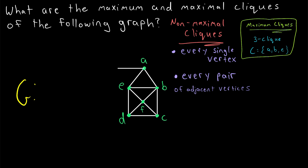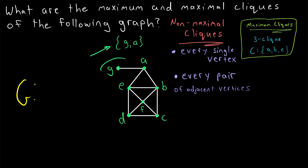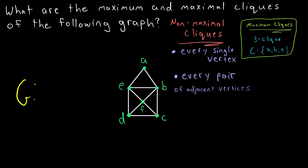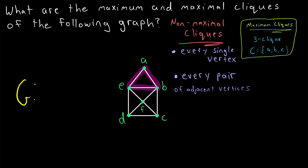Just to quickly adjust this example, suppose we have another edge joining the vertex A to some other vertex G. Then the two vertices G and A would make up a maximal clique, because they make up a complete subgraph with two vertices and they're not part of any other clique. Notice that this edge doesn't lie on a triangle. So in this adjusted graph, these two vertices G and A would make up a maximal clique with two vertices. But in our original graph, every pair of adjacent vertices also lies on a triangle, so all of those pairs of adjacent vertices are non-maximal cliques, because they can be extended to include the third vertex of the triangle.